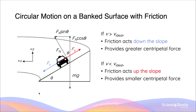In a previous video on banked surfaces without friction, we were able to quantitatively derive an expression for an ideal velocity for a vehicle going around a banked surface without needing friction. However, in real-life situations, you can imagine the vehicle will not be able to maintain this ideal velocity all the time. If the vehicle's velocity is greater than the ideal velocity, then we need a greater centripetal force to keep the object in circular motion without changing its radius.